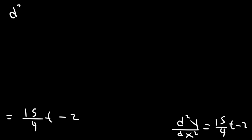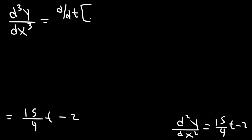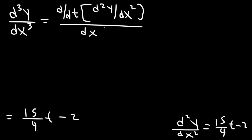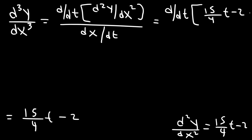Now let's find the third derivative, d³y/dx³. We're going to differentiate the second derivative d²y/dx² with respect to t, and then divide it by dx/dt. And dx/dt is still 2t, so that's not going to change.